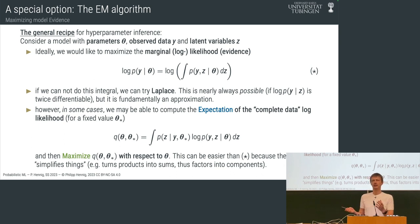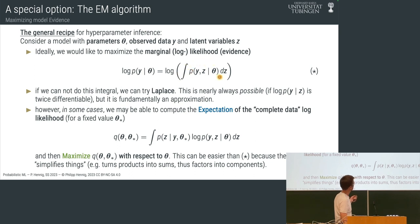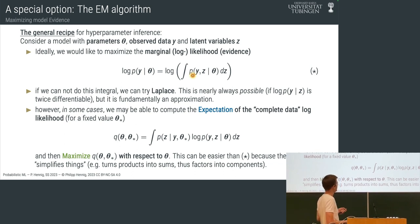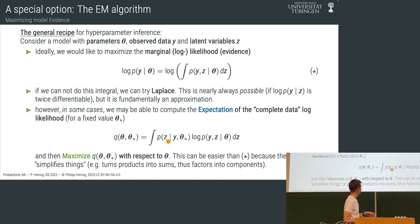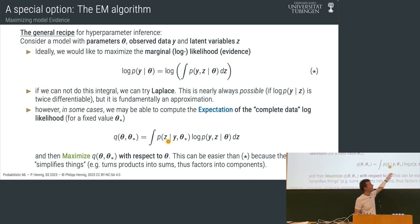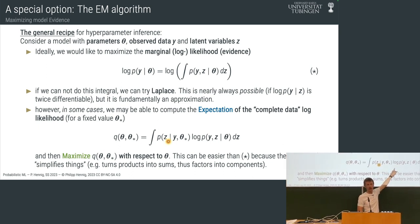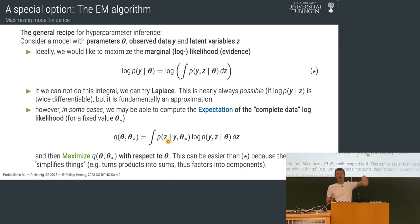A third option is: we look at the expression again and realize that taking the logarithm of the integral is the hard part — we don't know how to do this integral. So what you can try is to move the logarithm inside the integral, integrating over a probability distribution. One way to think about this is it's the posterior over z given the data for a particular choice of parameters, or an approximation to the generative model for the data assuming the parameters are exactly theta star.